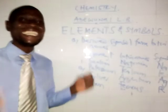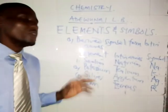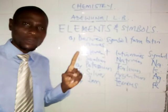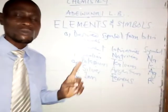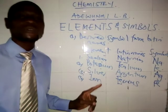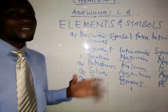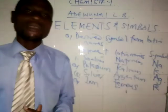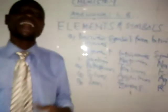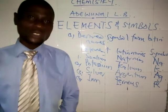So those are the categories of elements and their symbols. Having known this, we can go further to talk about chemical formulas. In a nutshell, no two elements have the same symbol — each element must have one unique symbol. Till we meet again, please subscribe to my YouTube channel for more lectures. Thank you.